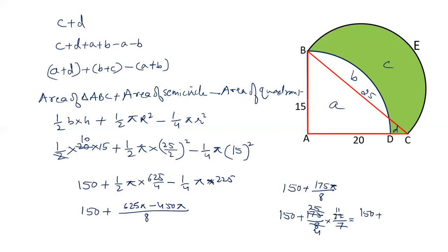So, 150 plus 25 into 11 is 275 divided by 4. So, you can divide this value. 4 6 are 24. 8. 7 5. Add these two values. 218.75. So, area of green region is 218.75.